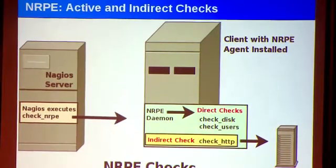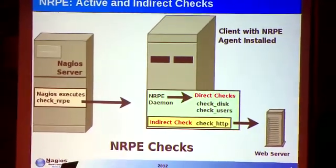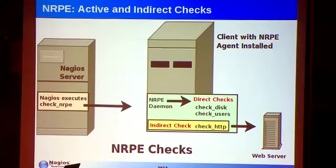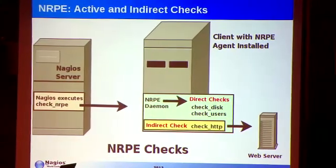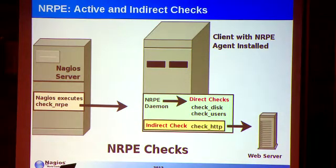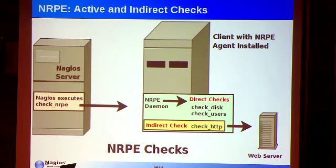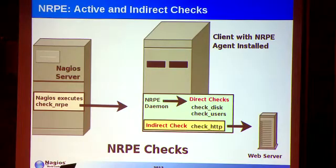Indirect checks are a little bit different. With an indirect check, Nagios connects up to the client and executes a plug-in like check_HTTP — in other words, it's going to connect to another box to monitor that other box. This allows you to have two different networks, so your client could be on two networks and you could be monitoring based on multiple networks. Those two check types are both very possible and easily set up.